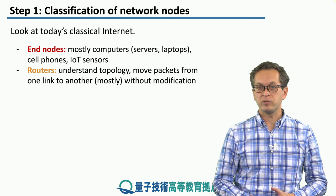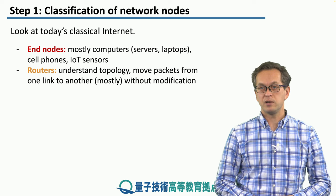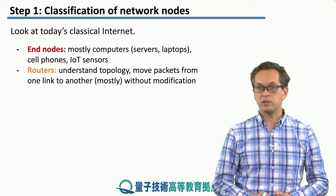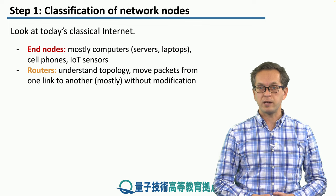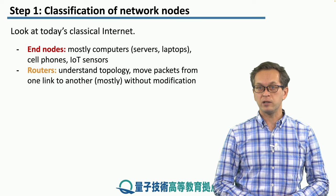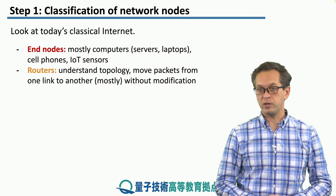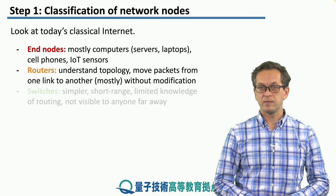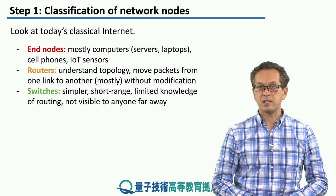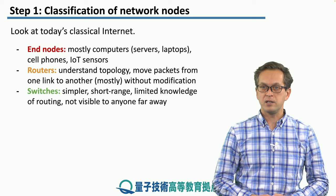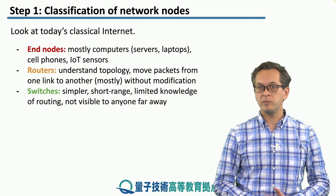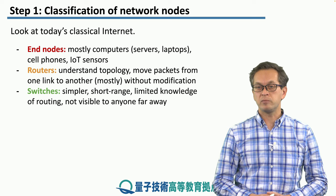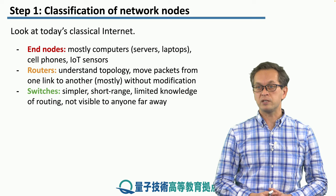The next type of nodes are routers. These boxes understand the topology of the network and how to move packets from one link to another, mostly without modification. Next are switches, which are similar to routers but a lot simpler, with limited knowledge of routing. They are more short range and not visible to anyone that is far away.